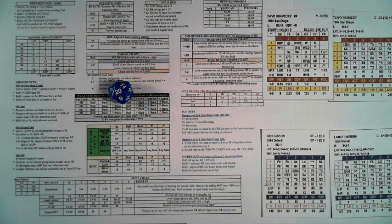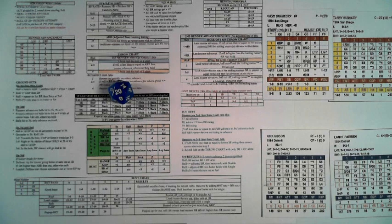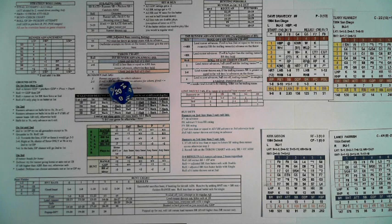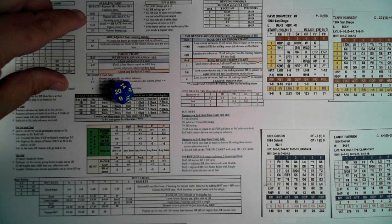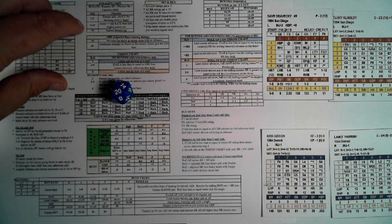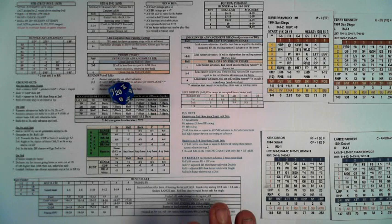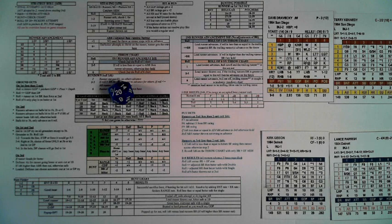All rolls of 20 are caught stealing no matter what the adjustment is. All rolls of one or two are subject to a catcher's error check — roll another d20 against the catcher's error rating. The chart summarizes: rolls one to two mean runner safe, check for catcher throwing error; rolls three to 19, if equal to or less than stolen base rate runner is safe, otherwise runner is out; roll of 20 is thrown out no matter what.